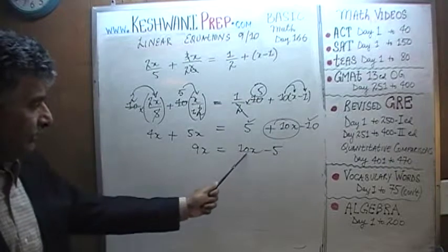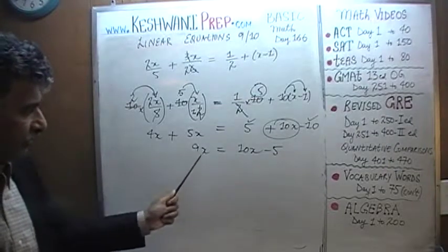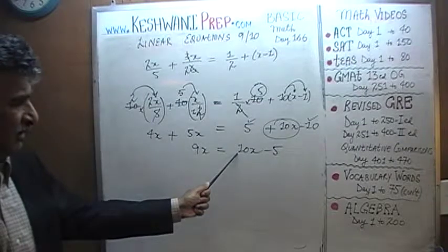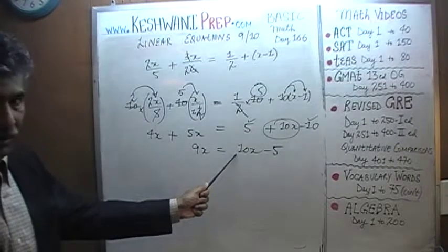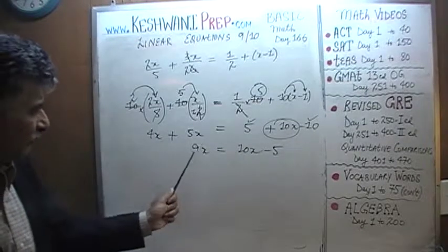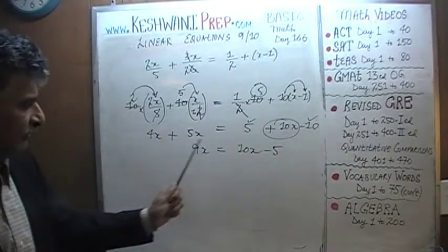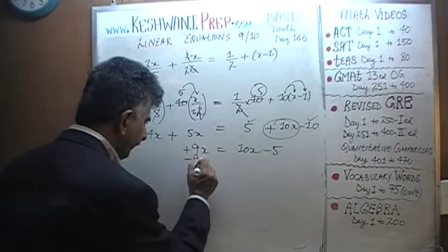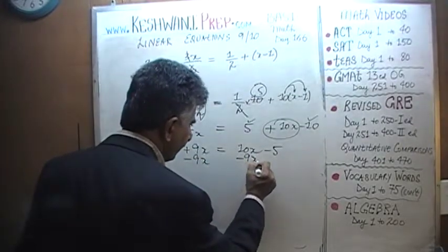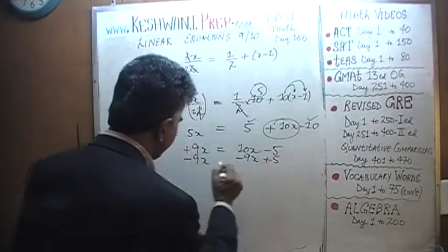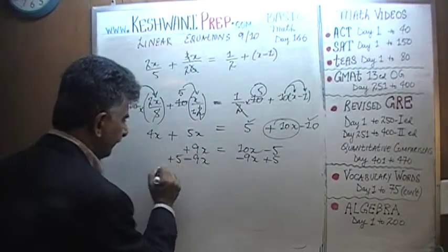Now if we were to subtract, if we were to bring this 10x on this side we could do it but then we'll end up with a negative coefficient here. I don't like having a negative coefficient with the variable so instead of bringing 10x to the left hand side let's bring the 9x to the right hand side. This is the positive 9x, let's subtract 9x from here, let's subtract 9x from here and bring the 5 to that side. Add 5 to this side, add 5 to that side.